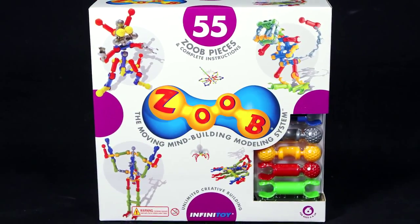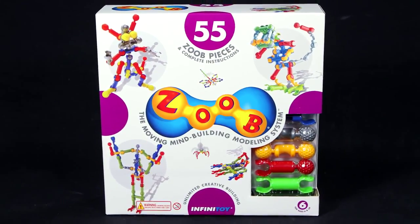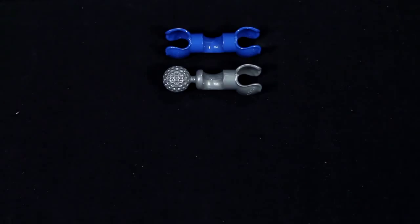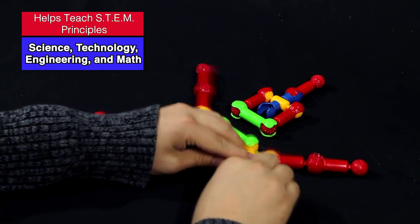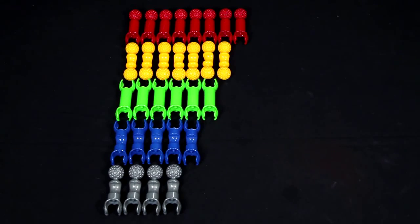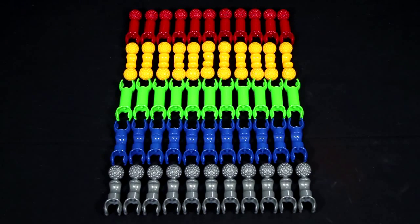Create a world of fun with the ZOOB 55 piece kit. This kit features five different types of pieces that can snap together in 20 different ways. Everything is included for your child to build 23 different ZOOB creations.